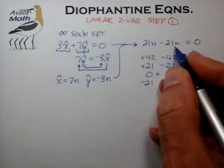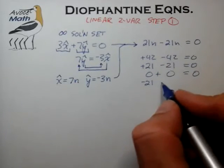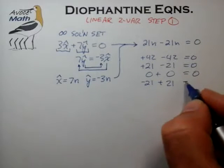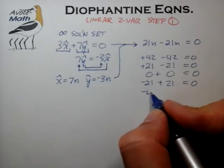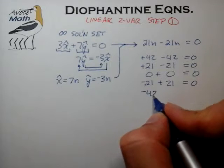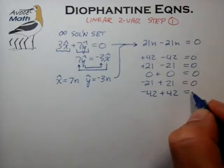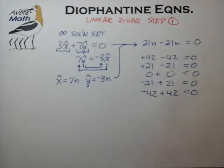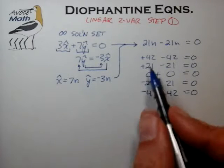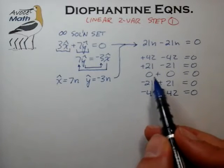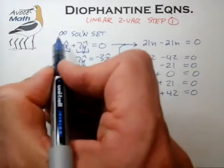We can go in the reverse direction: making n equal to minus 1, this side forms the opposite, giving positive 21, which again sums to zero. Continuing one more step, minus 42 plus 42 again adds to zero. This is an important observation because it tells you the very nature of this infinite solution set that we seek.